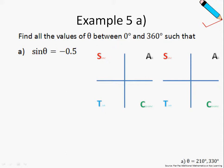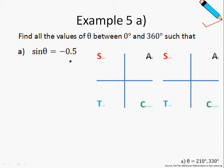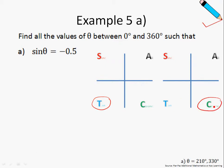In this example, we are asked to find the values of θ between 0 degrees and 360 degrees such that sin of θ is negative 0.5, or negative half. Recall that for sin of θ to be negative, we must definitely be in our tangent or our cosine quadrant.